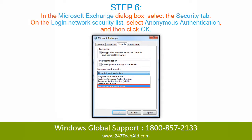Step 6. In the Microsoft Exchange dialog box, select the Security tab. On the logon network security list, select Anonymous Authentication, and then click OK.